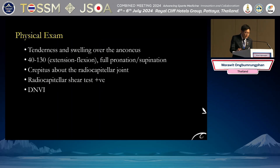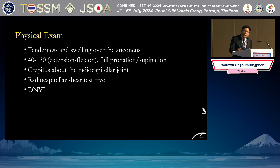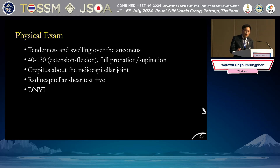On exam, there was tenderness and swelling over the anterior area. He had limited range of motion — 40 to 130 degrees of flexion and extension — with full pronation and supination. He had crepitus about the radiocapitellar joint, a positive radiocapitellar grind test, and intact distal neurovascular status.